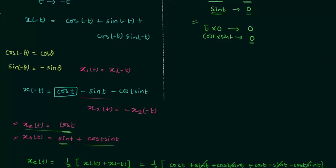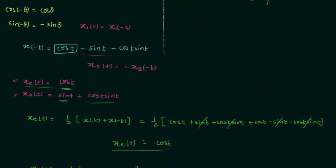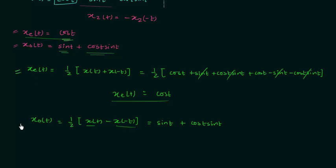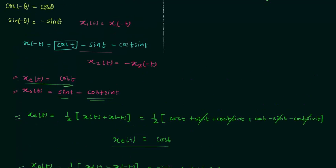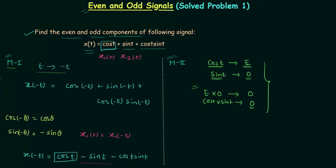Comparing the two methods: using method 2 we arrive at the solution in just two steps, whereas in method 1 we perform time reversal and then apply the formulas for even and odd components. In the next lecture we will solve another, more complicated problem based on even and odd components. If you have any doubts, please ask in the comment section.